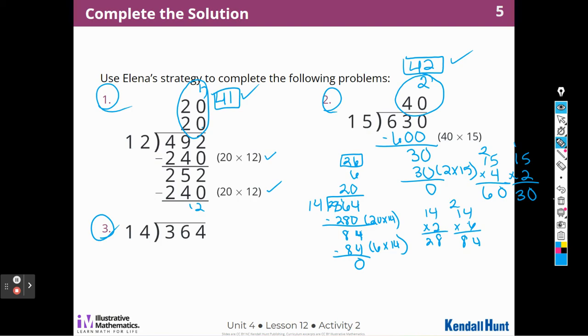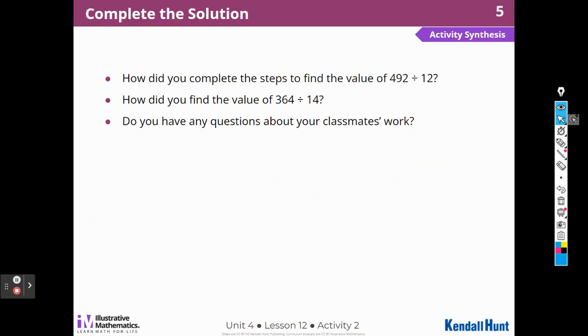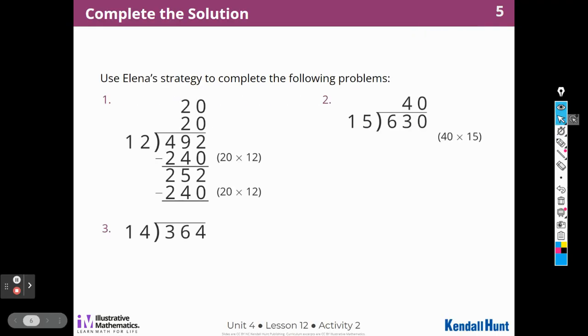Let's move on to our synthesis. How did you complete the steps to find 492 divided by 12? Well, I just had one more step to do. She had done most of the work, right? So all I had to do was to find one more 12. Because when I subtracted, I got 12. And so I knew that I only had to do one more.